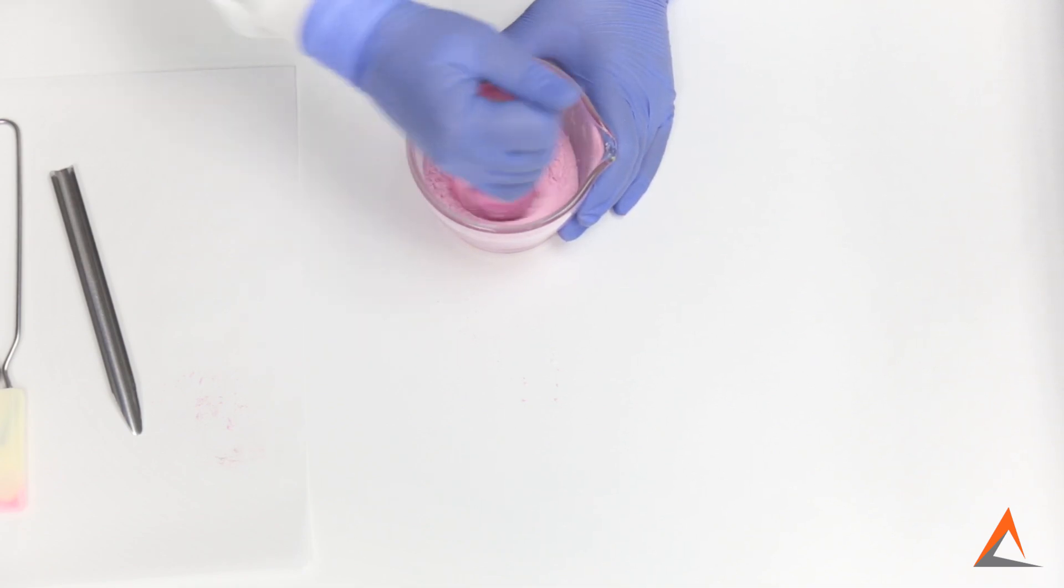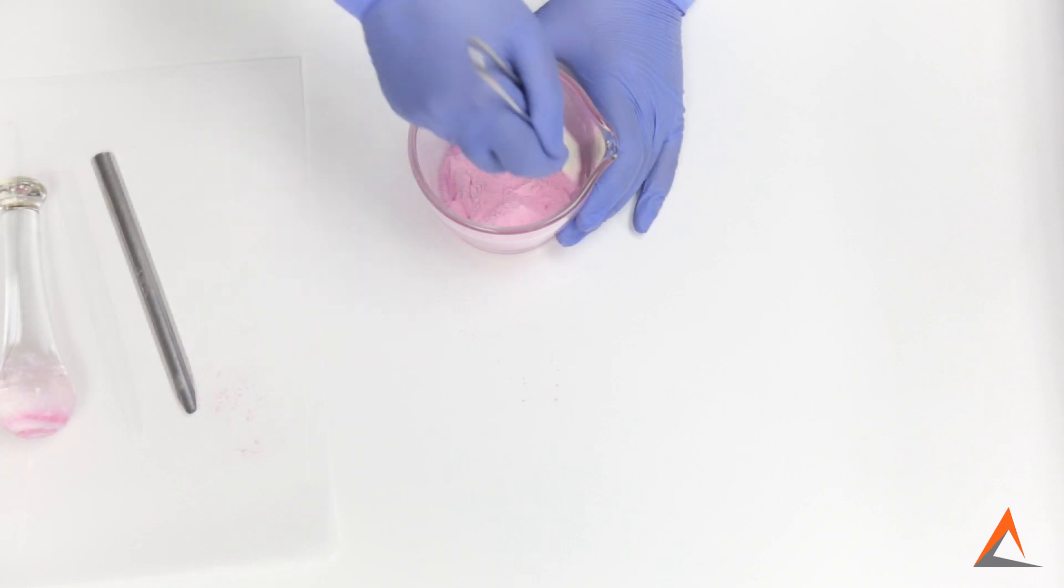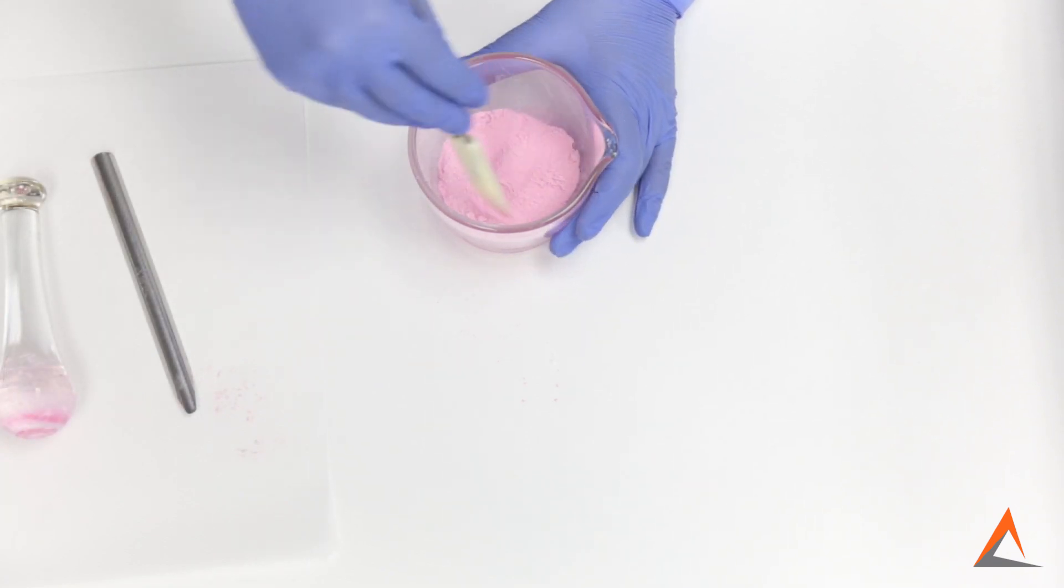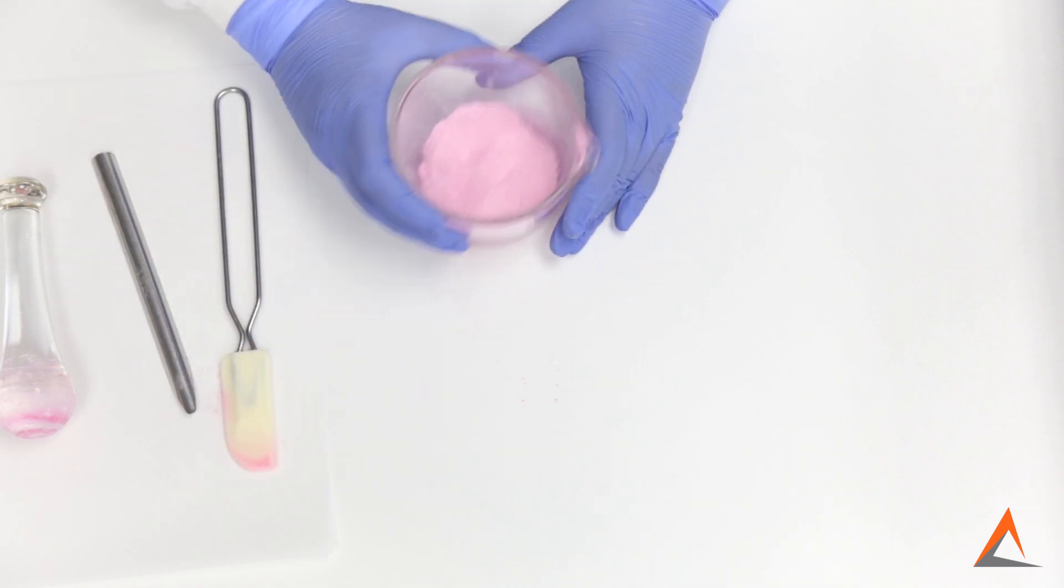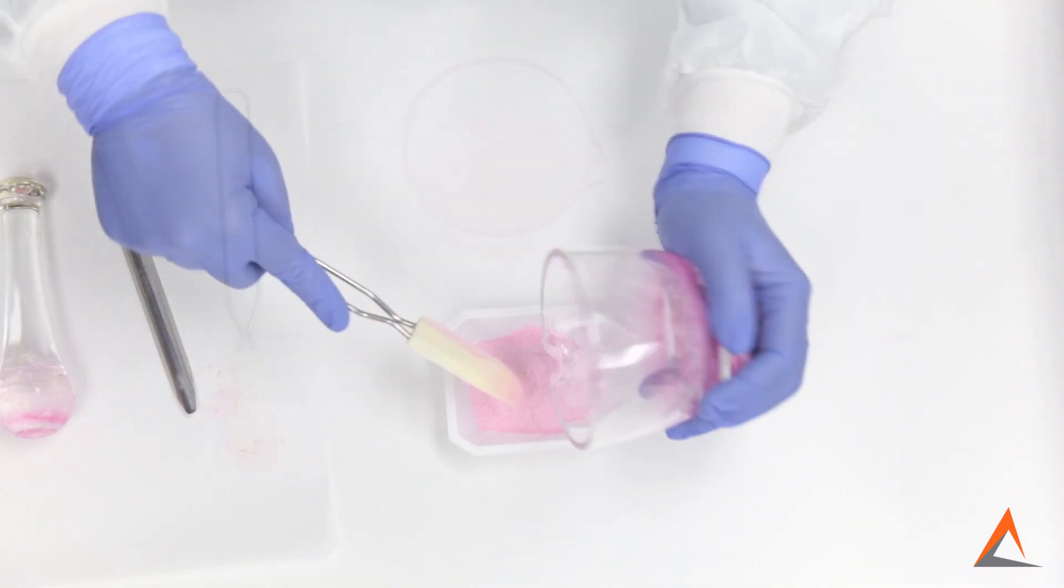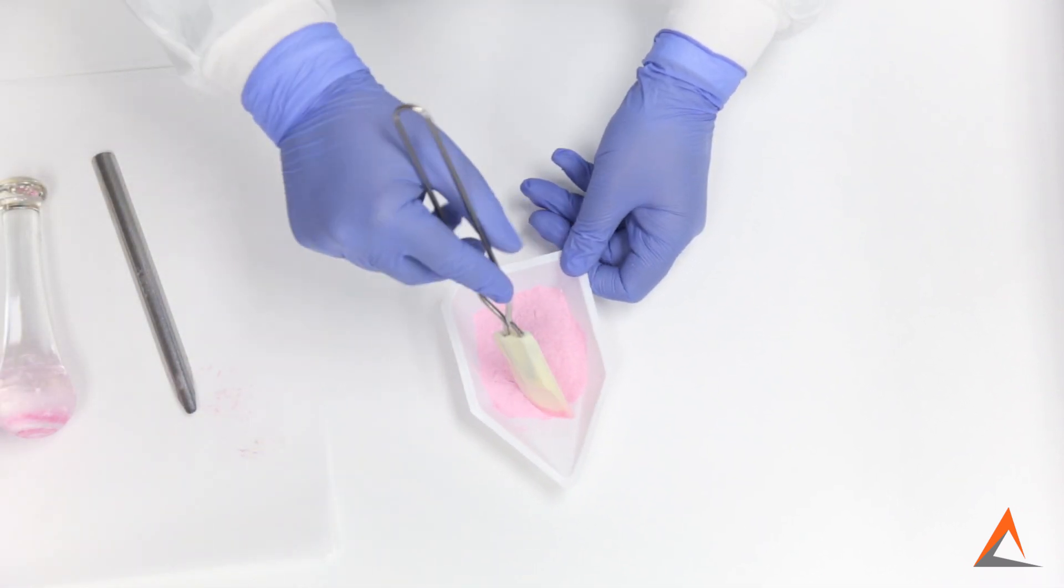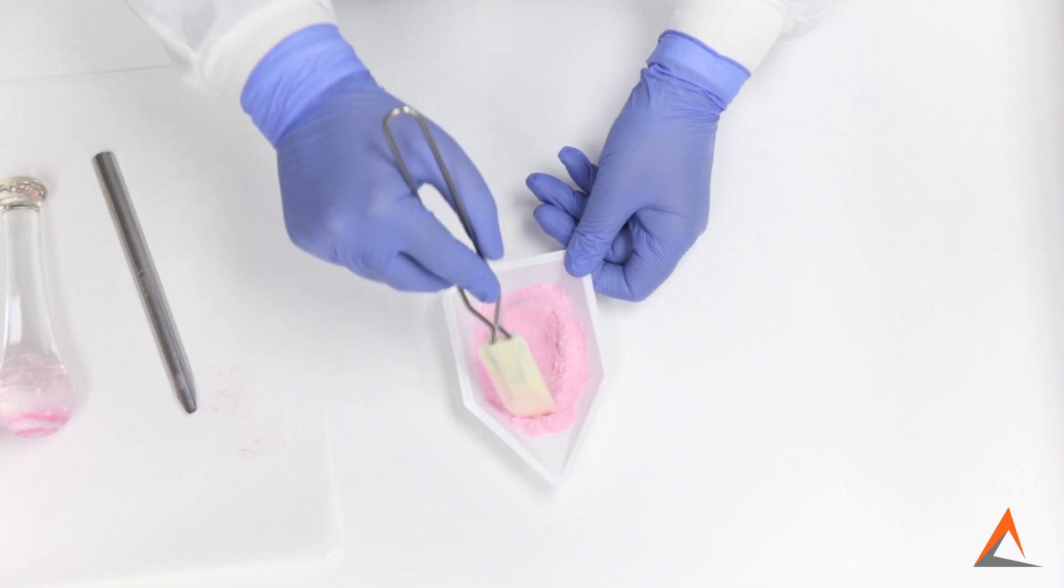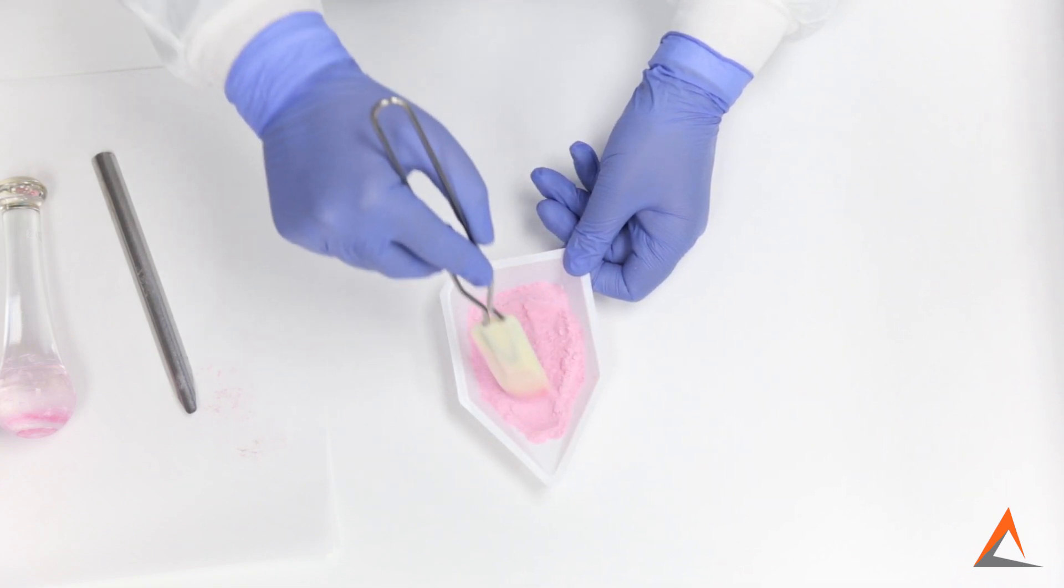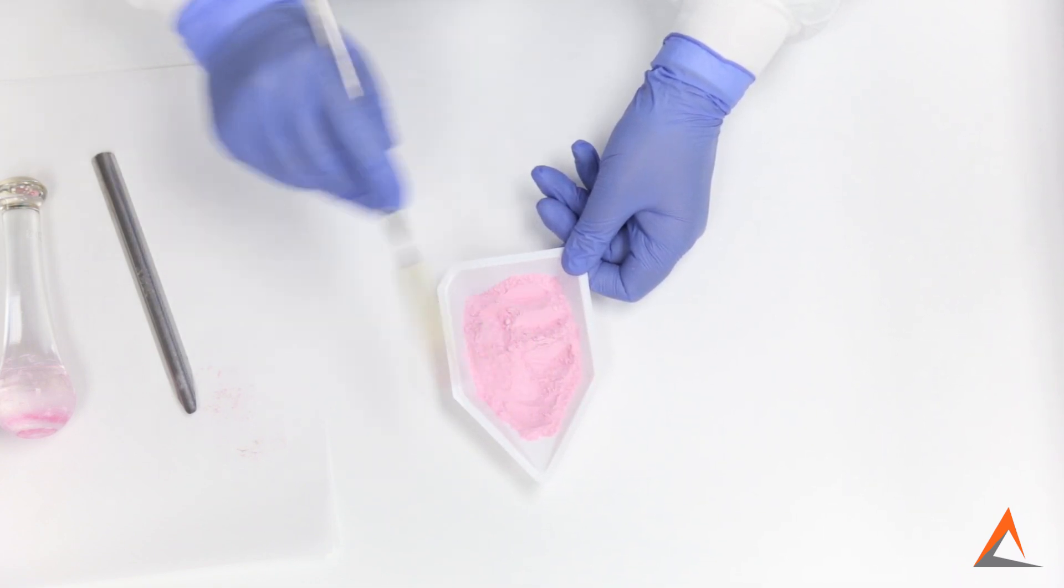Even though we did this geometric dilution technique using powders, this can also be used with creams, gels, ointments and liquids. We now have this thoroughly mixed and since we used red dye as the ingredient of the smallest quantity, we can visually inspect the homogeneity of the mixture. As you can see, our resulting powder is a fine homogeneous powder blend. There are no little clumps of red dye or lactose powder that haven't been mixed.